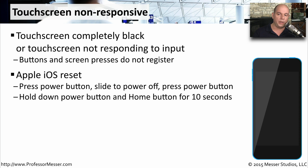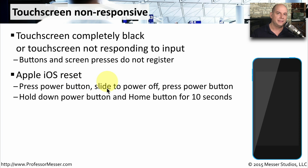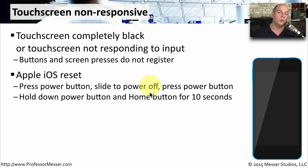In iOS, we can perform a standard reset by powering off the device — holding the power button, sliding the message to say power off, and then pressing the power button. This is obviously going to be a problem if the touch screen is unresponsive, since we're not able to slide to power off. So what we may want to do is perform a hard reset.